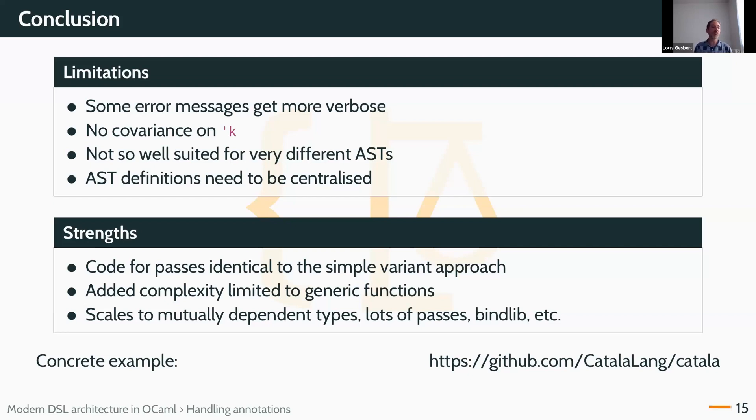The biggest strength, in my opinion, of this is that the code for a single pass will actually be written in the exact same way it would have been written if we had defined a specific variant just for this pass. And actually, we translated from a compiler, a first prototype written with this approach, and it was very straightforward, and we didn't have to change most of the code for the passes. Really, this is where this shines. As I said, the complexity is limited to generic functions, and I couldn't detail everything, of course, here, but this scales pretty well to mutually dependent types, lots of passes. We use bindlib, so that works well too. If you want to see concrete examples, you can check the code on GitHub and feel free to ask questions. Thank you very much.